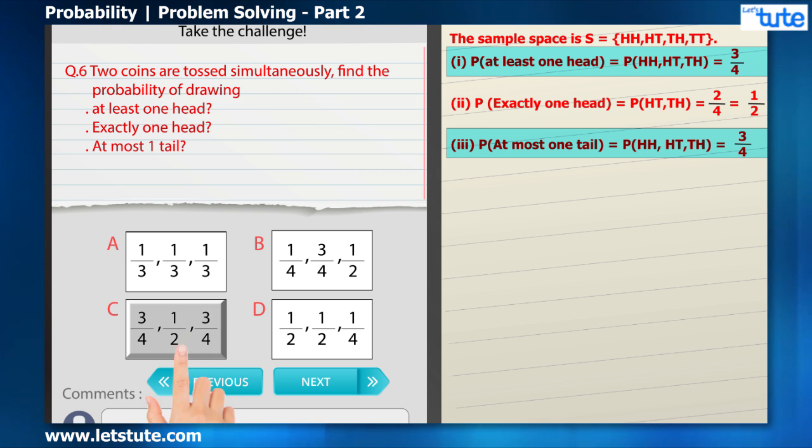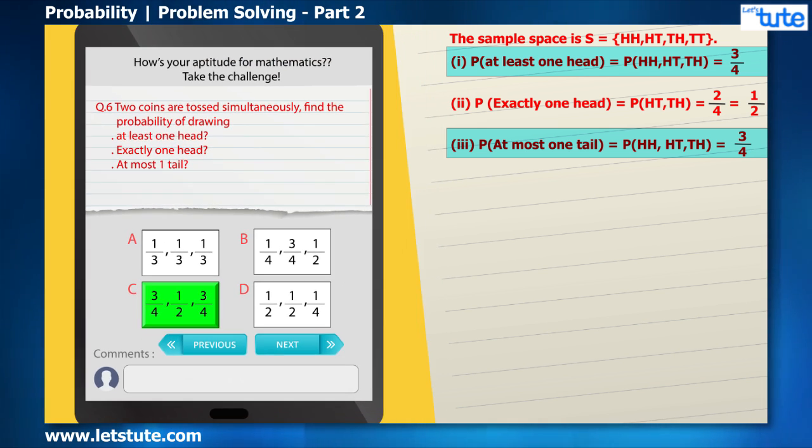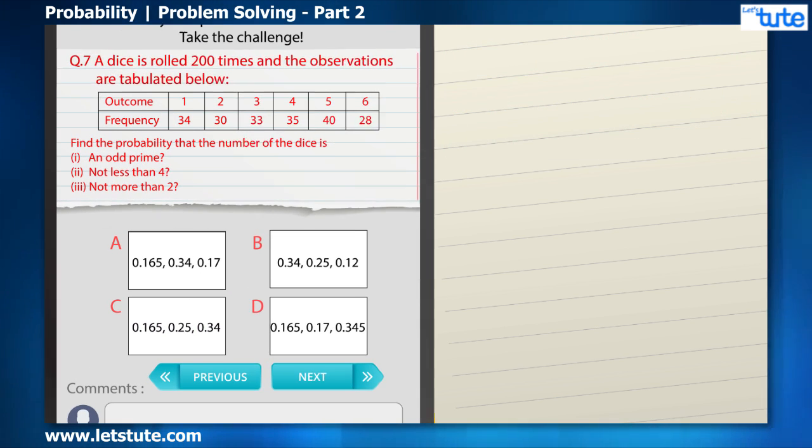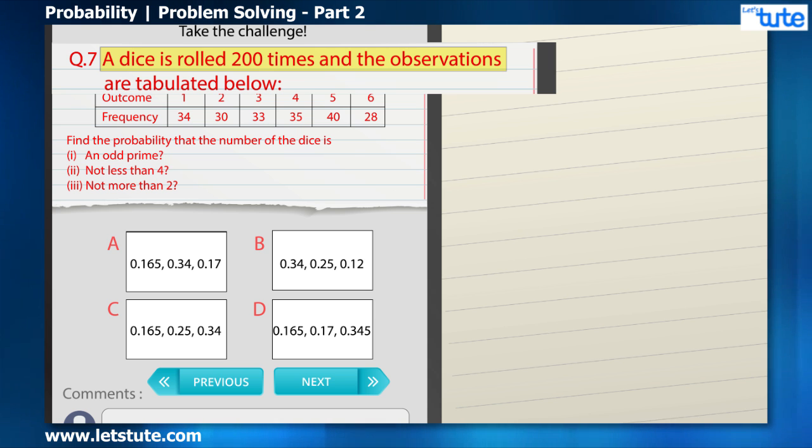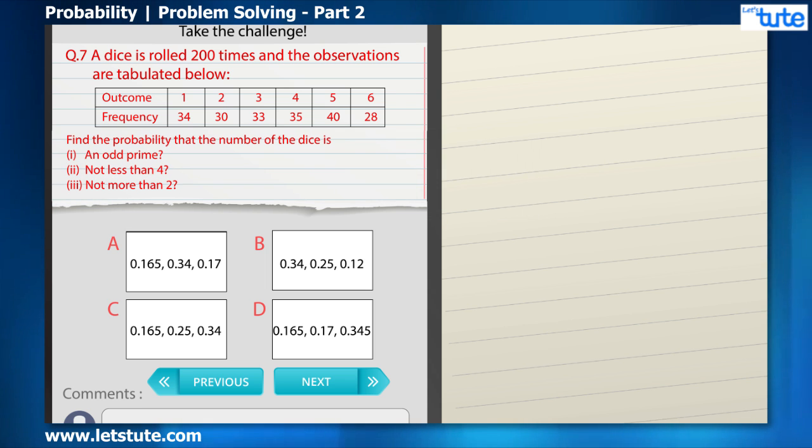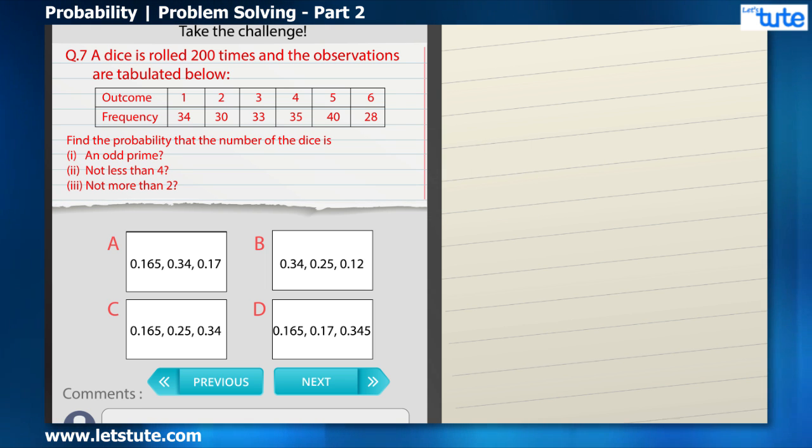He realized that the questions on probability were so relatable with our daily life that they can be solved intuitively. Well, Alex was really enjoying this, and then on his screen it showed the last question: A dice is rolled 200 times and the observations are tabulated below. Find the probability that the number of the dice is (i) an odd prime, (ii) not less than four, (iii) not more than two.